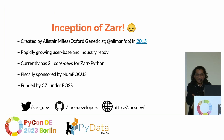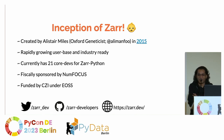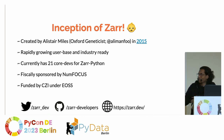ZAR was basically created by Alistair Miles. He is a scientist at Oxford who was working with genomic data of mosquitoes. Their datasets were large — hundreds of GBs and petabytes. He needed a way to handle and manipulate the data efficiently without losing information. This was created in 2015, and you can find the link to the first commit in the project.